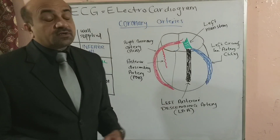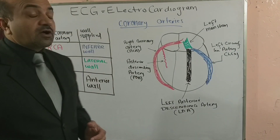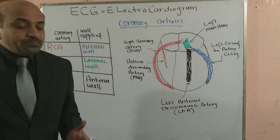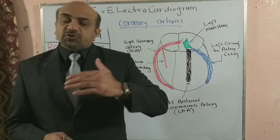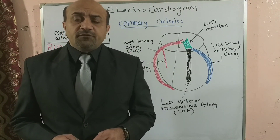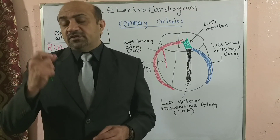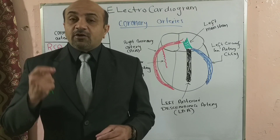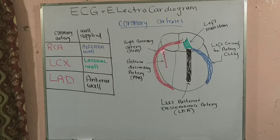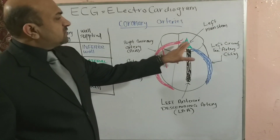These coronary arteries have their origins from the aorta, arising just outside of the aortic valve. Another very important fact to remember is that these coronary arteries fill during diastole, not during systole, because they run within the muscles of the myocardium. So they get filled during diastole, not during systole.